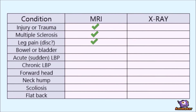For sudden bowel or bladder changes and loss of control, this is usually related to a herniated disc affecting the nerves that run the bowel and bladder. Again, nerves, soft bits — MRI. Acute or sudden low back pain, severe — 8, 9, 10 out of 10 for pain — is usually associated with a slipped disc irritating the nerve. Again, soft bits — MRI.